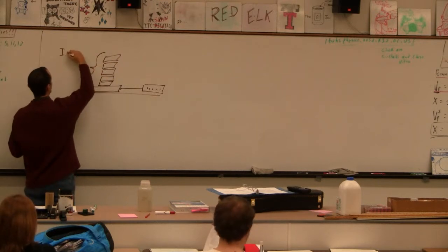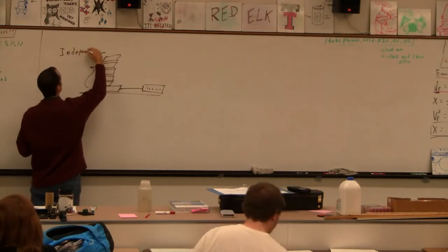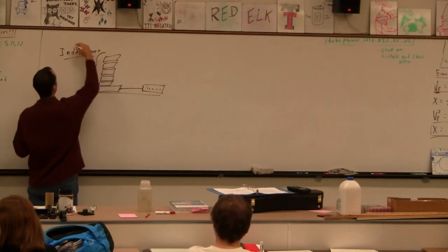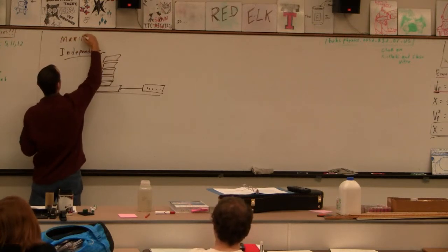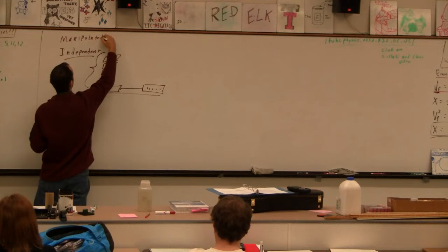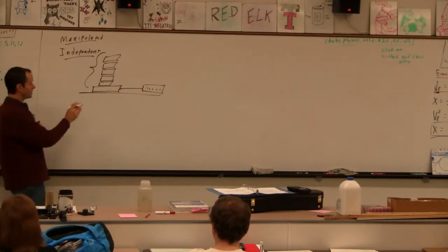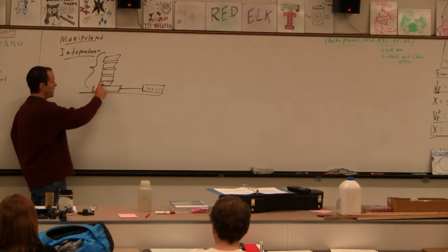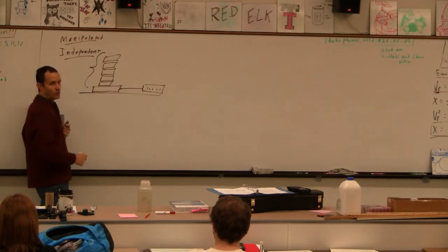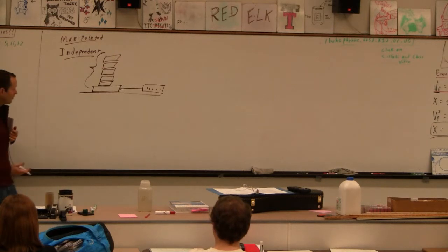This thing is the independent variable. The independent variable is also known as the manipulated variable. It's the thing that you manipulate. Be quieter than that. So that's the independent variable - I try just the block, and then I try 200 grams, 400, 600, 800, a whole kilogram. That would be my independent variable.